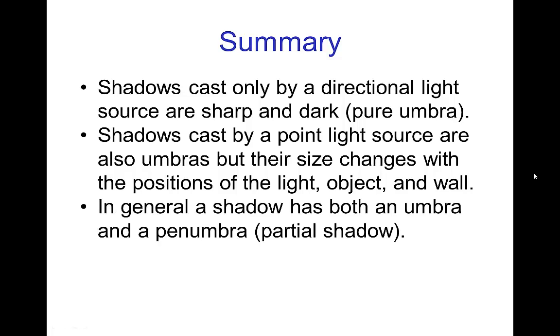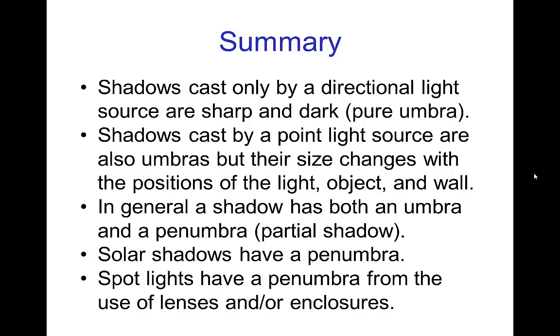The more general types of light sources have both an umbra and a penumbra. The penumbra is where the object casting the shadow only partially blocks the light. Solar shadows have a penumbra as we saw in those photos.